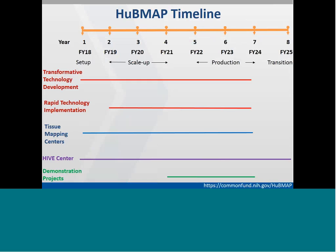The program timeline is an eight-year program starting at FY18 to FY25. Various initiatives are mapped onto this timescale. Broadly, there is a setup phase, a scale-up phase, a production phase, and a transition phase. The first few initiatives are expected to start between the setup and scale-up phase, whereas the demonstration project is expected to start later, once we have a body of data generated.